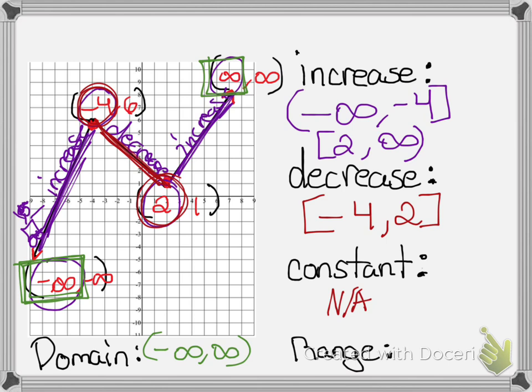To find my range, I'm going to be looking at the smallest y value of all my order pairs — that will be negative infinity. And the largest y value of all my order pairs will be positive infinity, so that will be my range. And that's it.